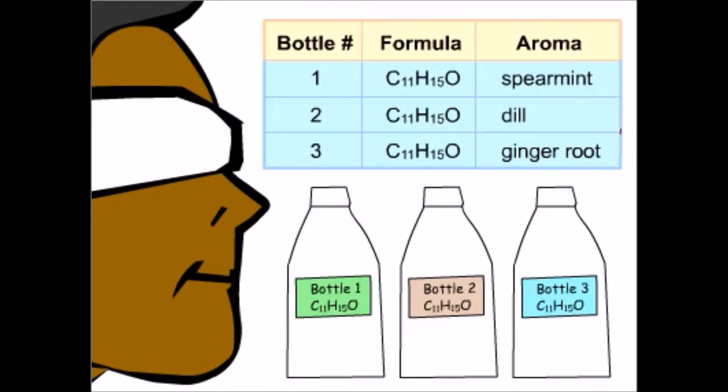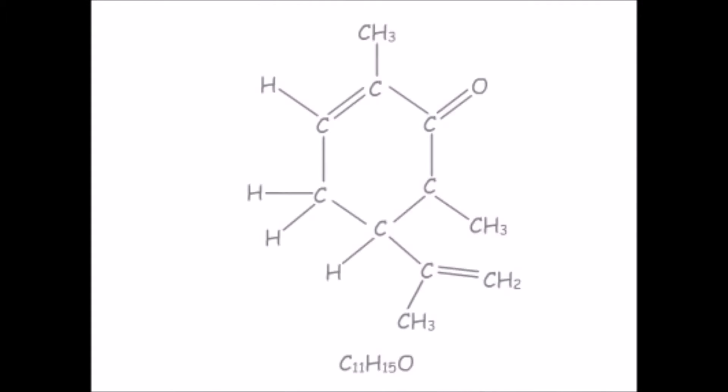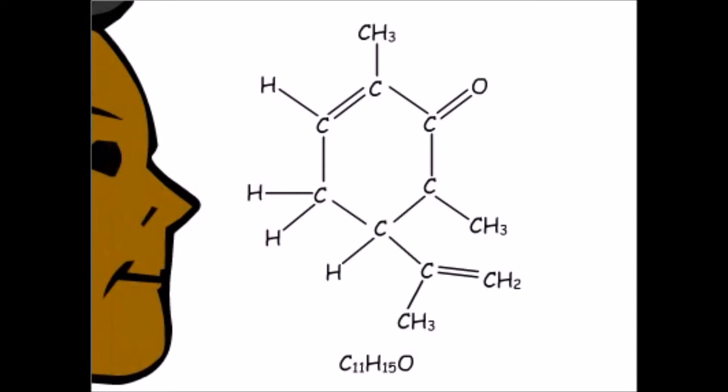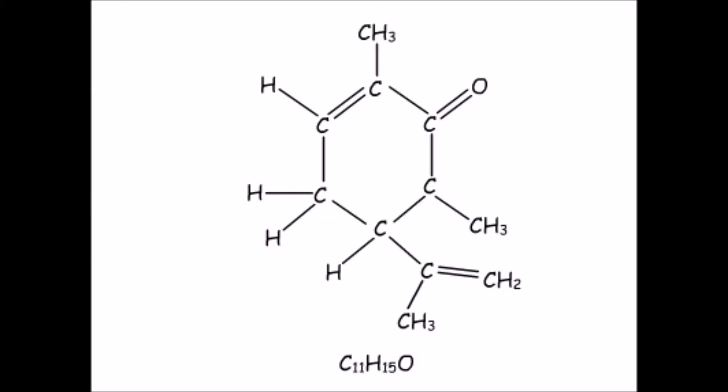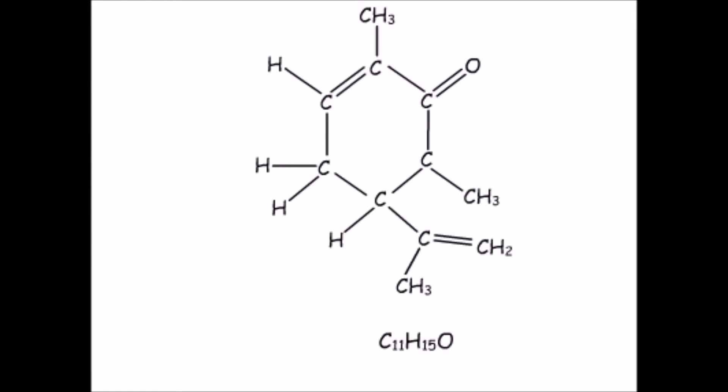Now that we know something about isomers, let's see if we can figure out what's different about the three compounds in the smell test we did at the beginning. The structure we see here is the compound with the formula C11H15O that we looked at earlier. Actually, make that smelled earlier. The common name of this molecule is carvone.